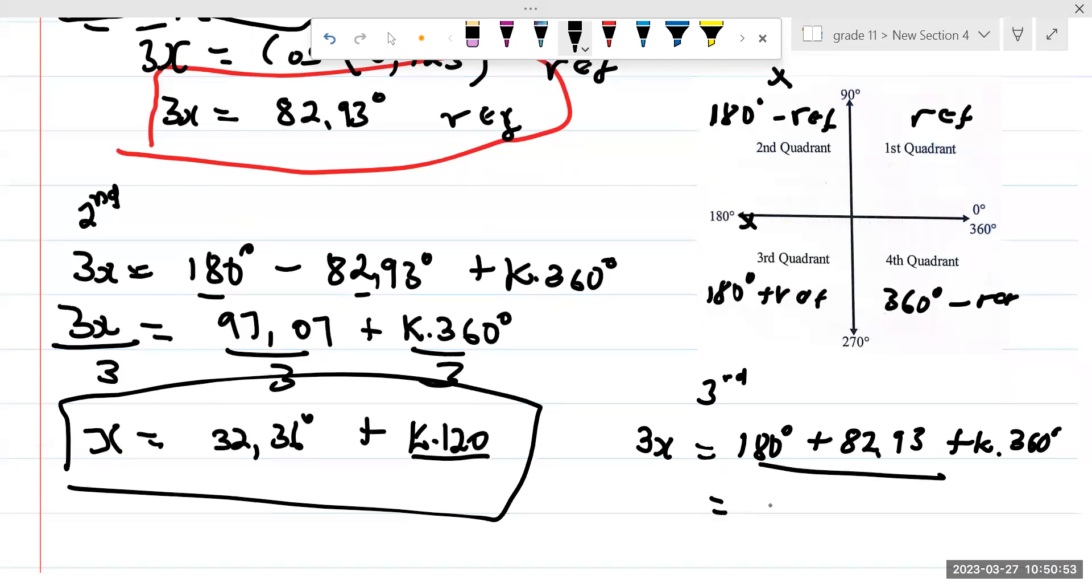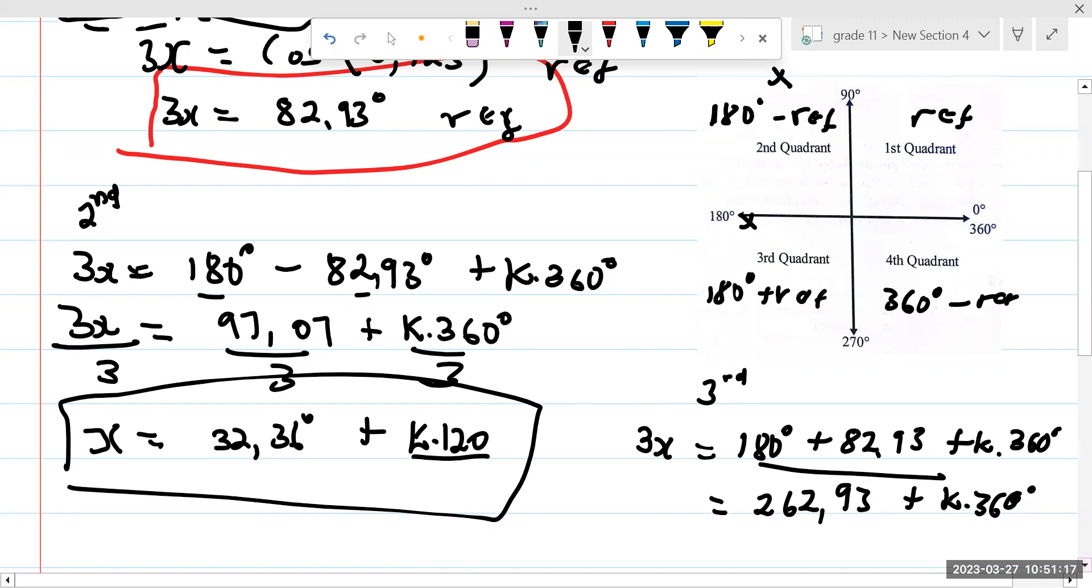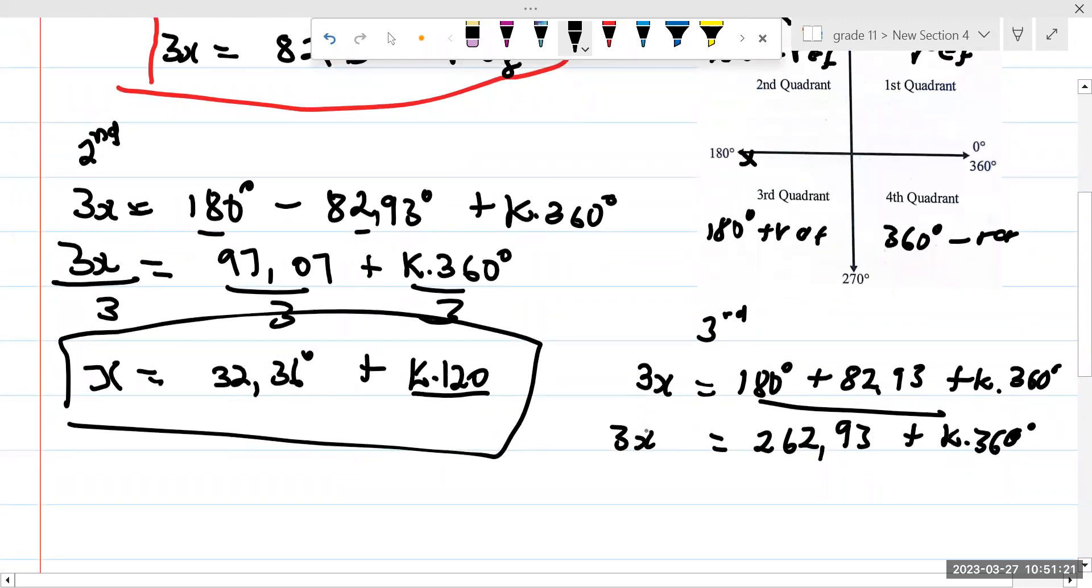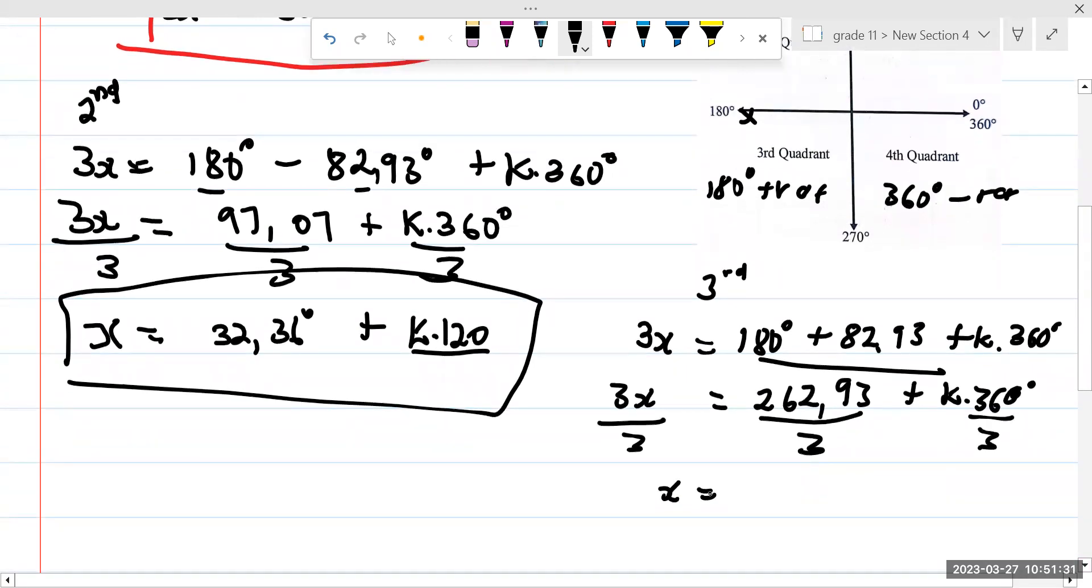So if I go on and say, okay, but now if I add this two, what am I going to get? It's 262.93 plus K multiplied by 360. Okay, then this is equal to 3x. I'm not looking for 3x, I'm looking for x. So how do I get x? Divide by 3, divide by 3, divide by 3. And then it says x is going to be equal to 87.64 plus K multiplied by 120.